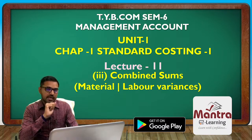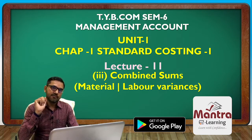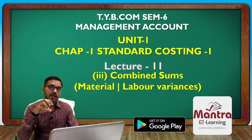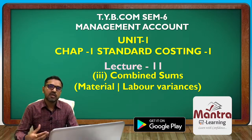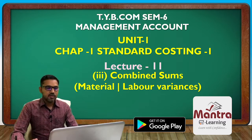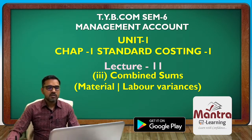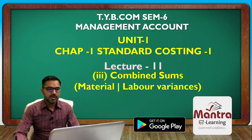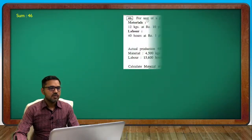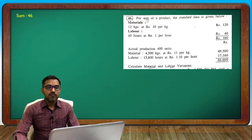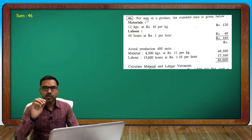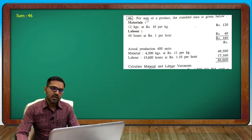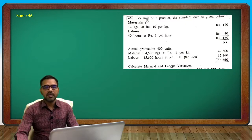Here is a common question. The question is: for production of one product, to make one item, you need to use material. Combined question number 46 — for one unit of a product, the standard data is given below. Material: 12 kg at 10 rupees per kg, and labor: 40 hours at 1 rupee per hour.